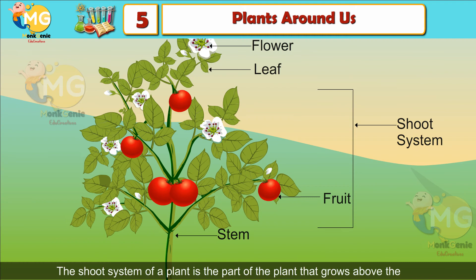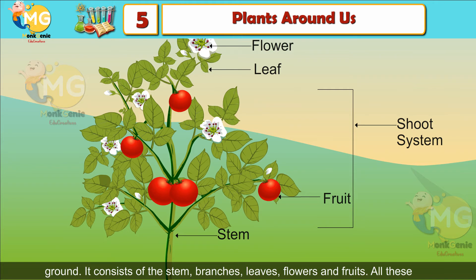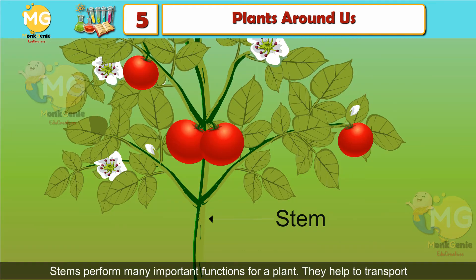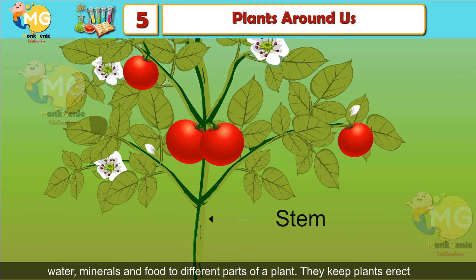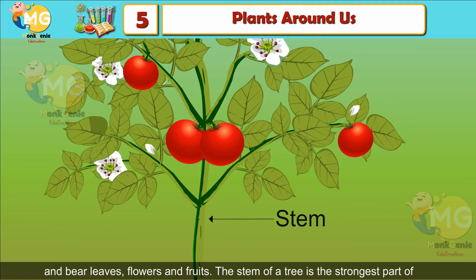The shoot system is the part of the plant that grows above the ground. It consists of the stem, branches, leaves, flowers, and fruits, all carrying out different functions. Stems help to transport water, minerals, and food to different parts of a plant. They keep plants erect and bear leaves, flowers, and fruits. The stem of a tree is its strongest part and is known as the trunk.